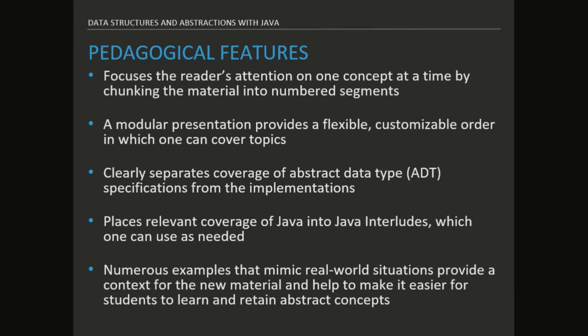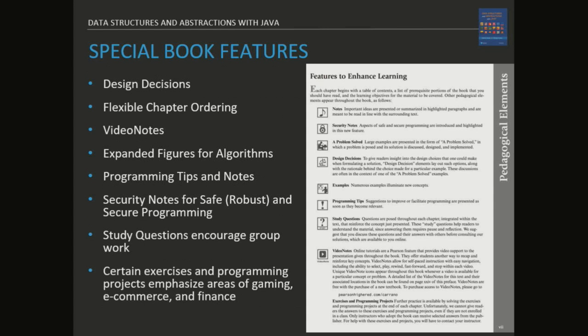A lot of our examples are real-life kinds of examples, and we've been adding these with more recent editions. There are many different features that make our textbook unique — from the prelude you can see a list of all the pedagogical features. Based on a talk we heard at this conference, we're going to add hints on how to use these features in the next edition. As for the other features — design decisions, flexible chapter ordering, and video notes — we'll get to those in more detail in a moment.